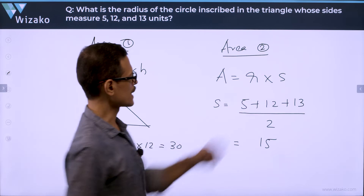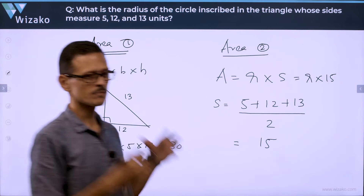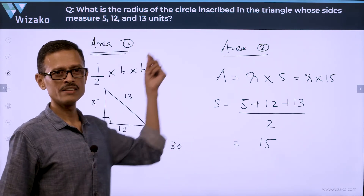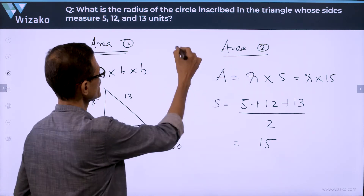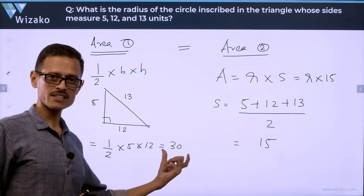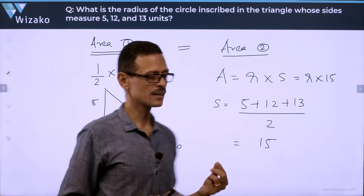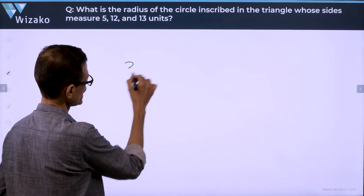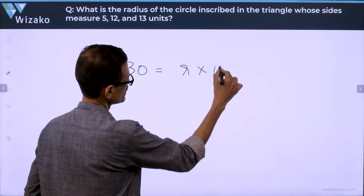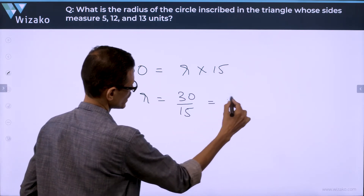Area equals R times S, so this is equal to R times 15. The framework equates the two area computations because it's the same triangle. One method gave us a value; the second left us with the unknown. So: 30 equals R times 15, therefore R equals 30 divided by 15, which equals 2 units.